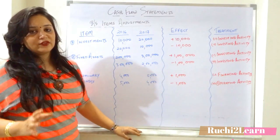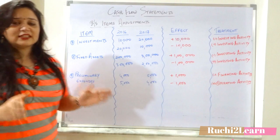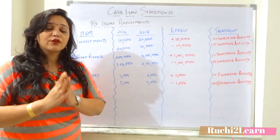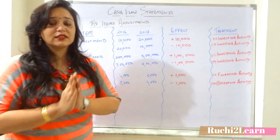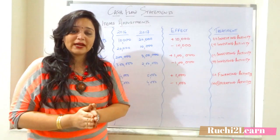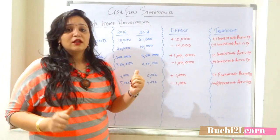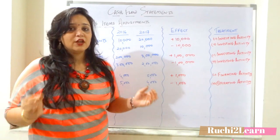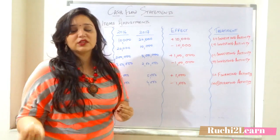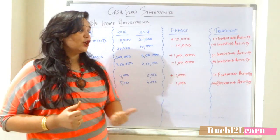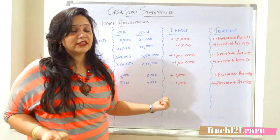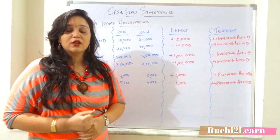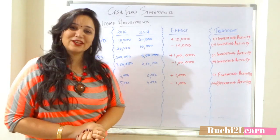These are all the adjustments for balance sheet items. I suggest that while starting a cash flow sum, first draw the format, then give effects to these items, because they are very easy and you can score marks easily. In the next lecture, I'll teach you how to give effects to profit and loss items. Thank you.